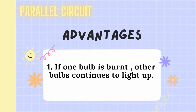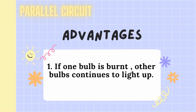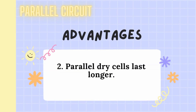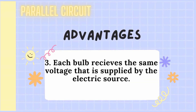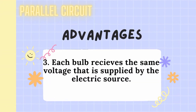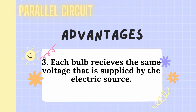Advantages of parallel circuit. 1. If one bulb is burnt, the other bulbs continue to shine. 2. Parallel cells last longer. 3. Each bulb receives the same voltage that is supplied by the electric source.